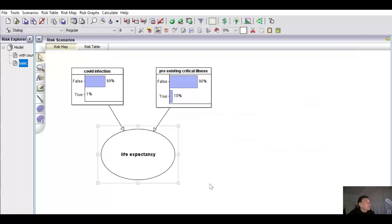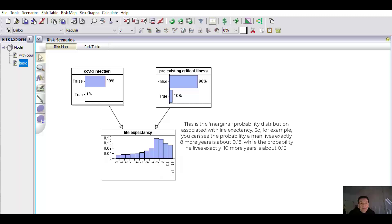Now, changing any of these probability assumptions within reason doesn't change the thrust of the argument and you're free to try out the model and make your own changes using the links in the video description below. Anyway, with these assumptions, we get the following prior marginal probabilities as shown here.